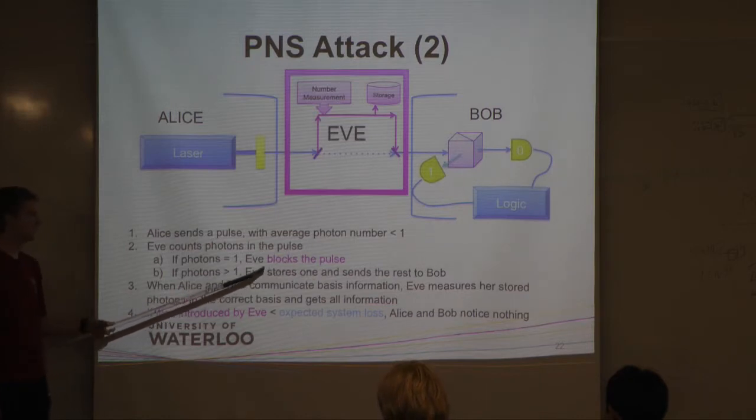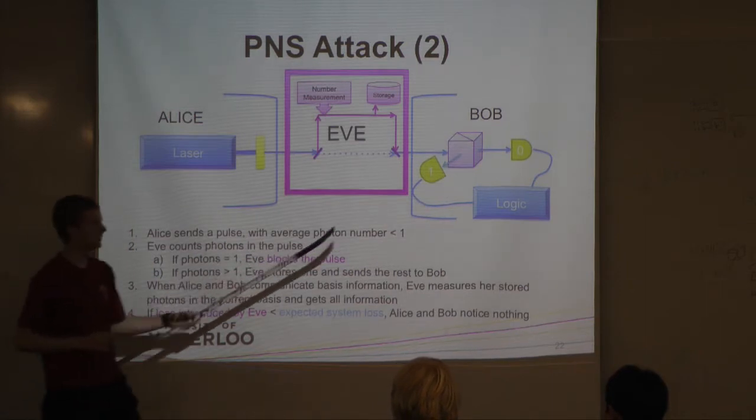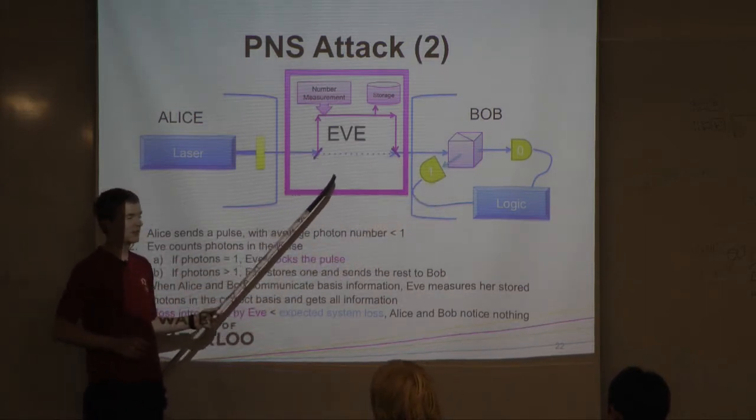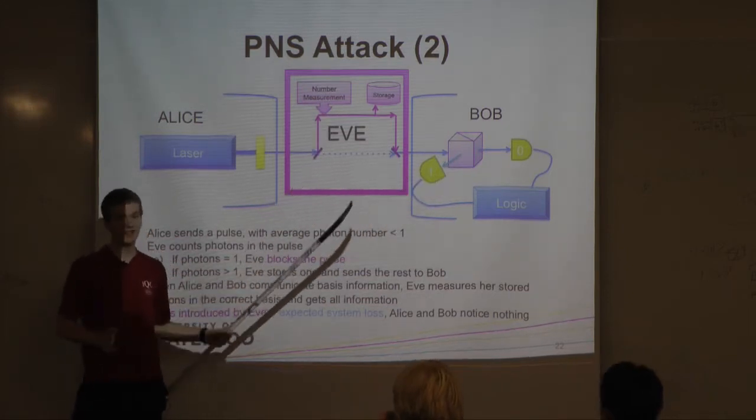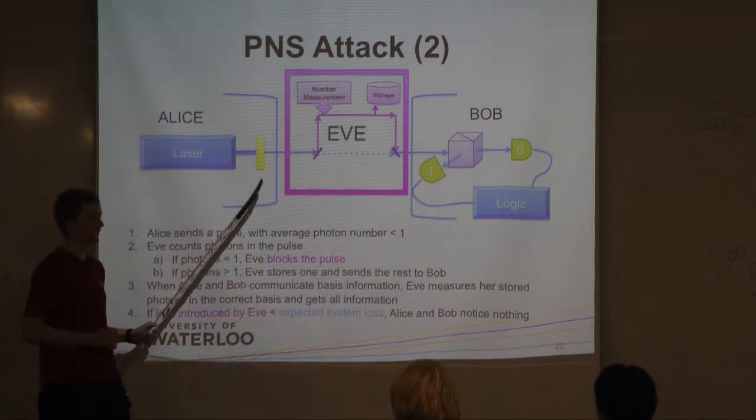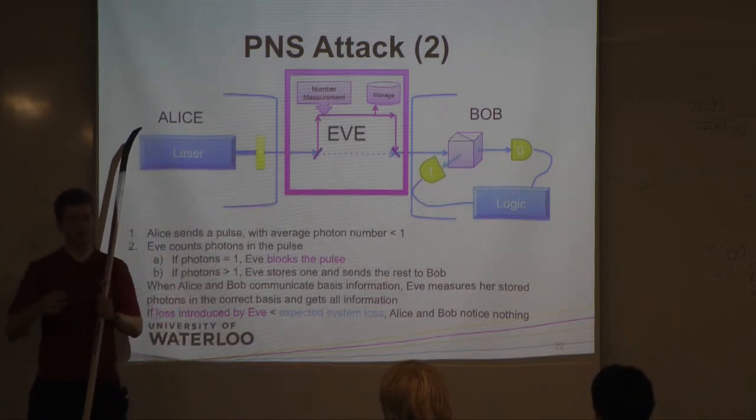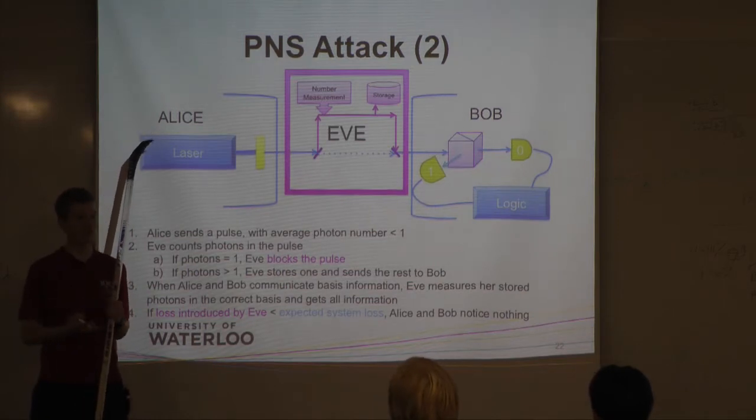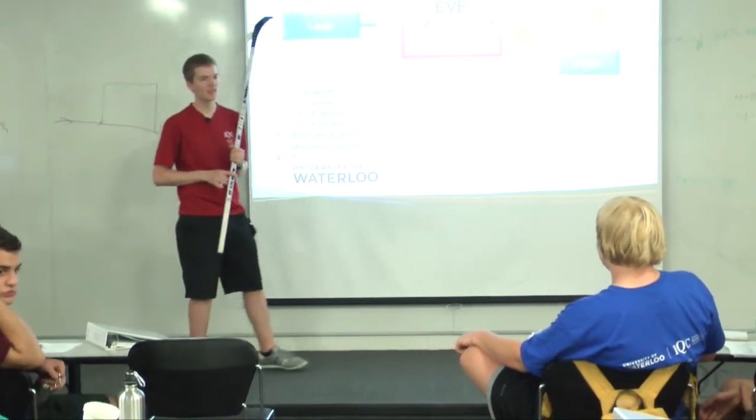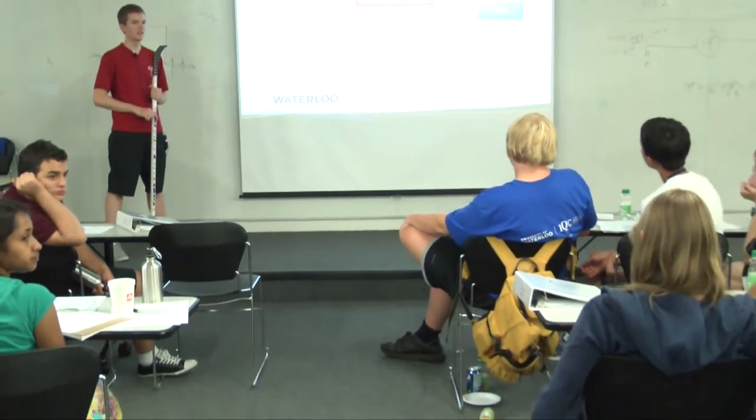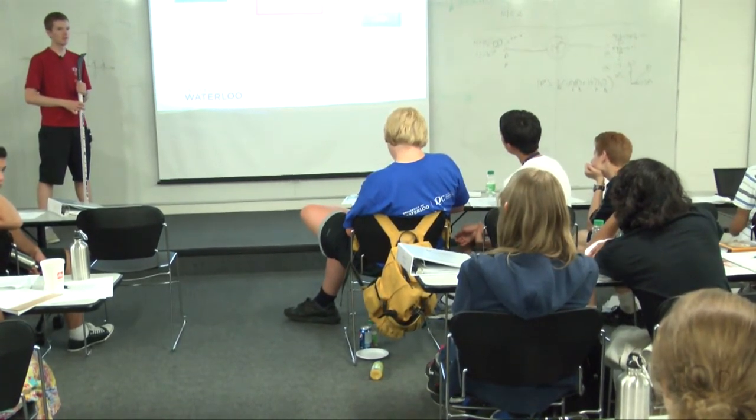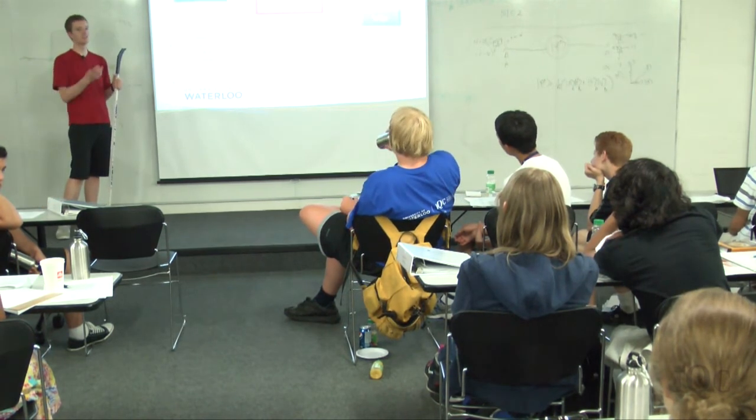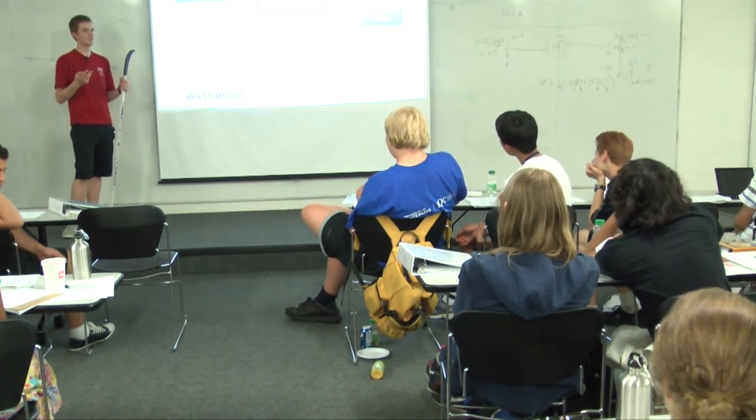So the question is, why does Eve block it if she doesn't measure it? She can't get any information from these one photon pulses, because Bob is expecting to receive one photon, and there's only one photon originally. Eve cannot measure it without disturbing it. So that's like the typical QKD that we all know. So if it's a single photon, it's better for her to block it so that Alice and Bob don't get a key bit across without her knowing anything. But if Alice and Bob each have a set of data, they're going to end up matching them up to find out what the error is. But if Bob is missing one, then everything basically gets shifted up once, and almost none of it's going to match, and you'll never realize that there's one missing.